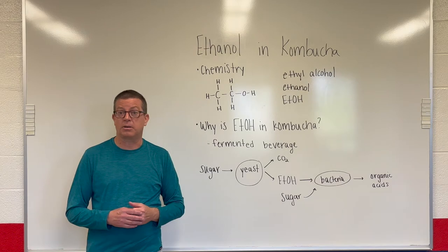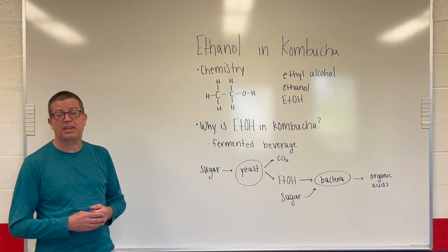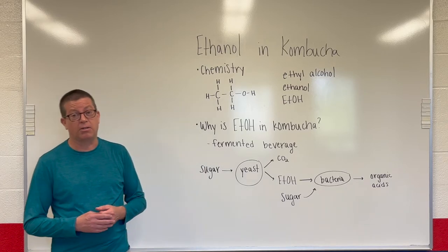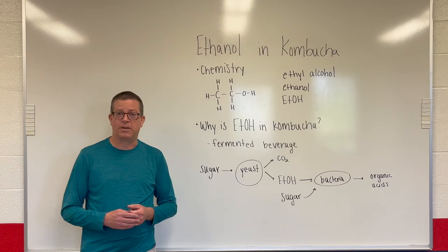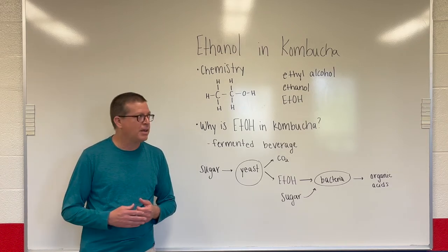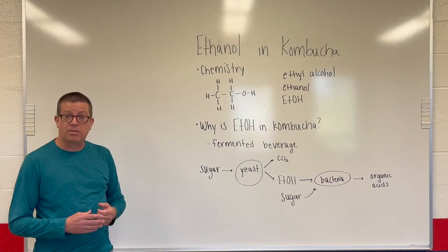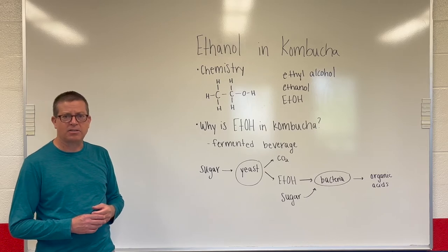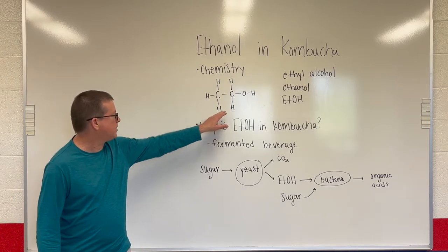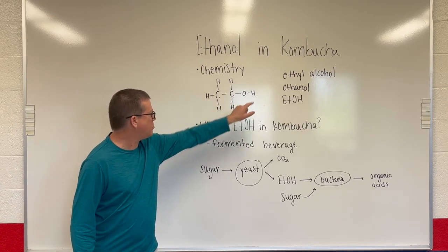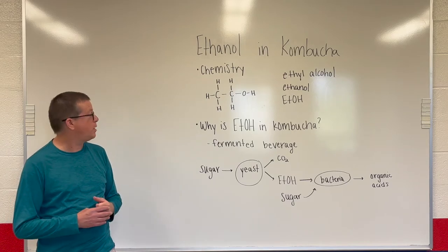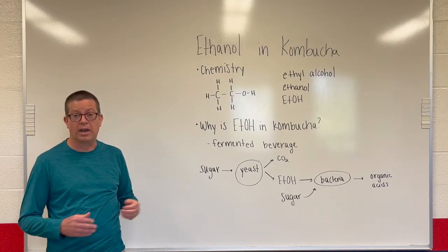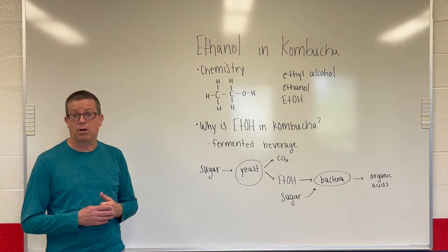Before we get into the kombucha-specific part of this video, we want to talk a little about the chemistry of ethyl alcohol. Ethyl alcohol is the type of alcohol found in kombucha, as well as in other alcoholic beverages such as beer or wine. Looking at the chemical structure shown here on the board, we have a carbon-hydrogen chain attached to an oxygen-hydrogen group, known as the alcohol group. It's this OH group that makes this an alcohol — all alcohols have that OH group attached to some sort of carbon-hydrogen chain.